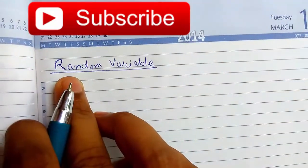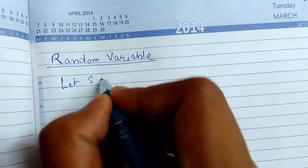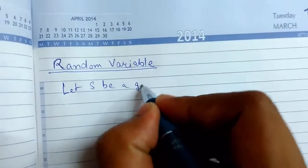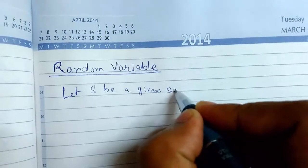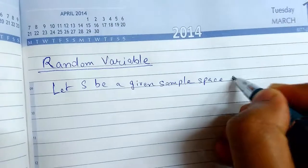So first of all we will be learning random variable. So let me add the definition. Let S be a given sample space of an experiment E.